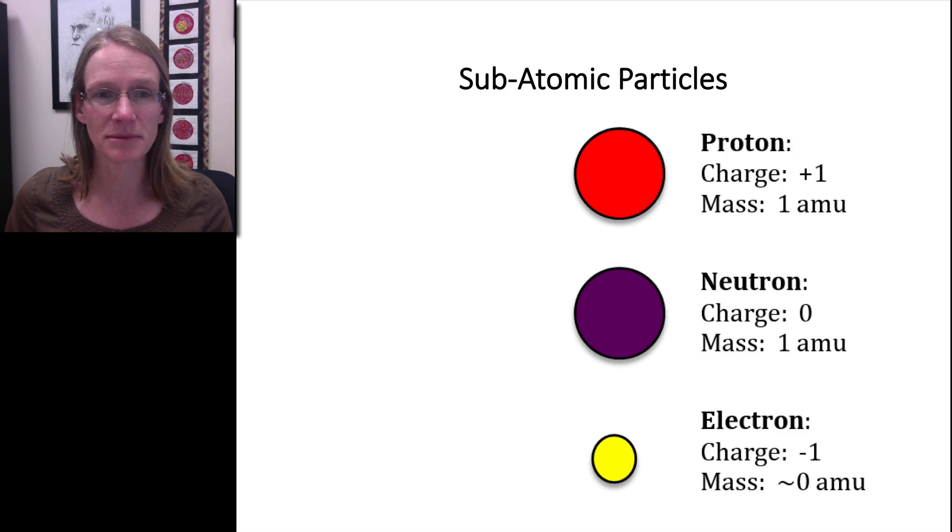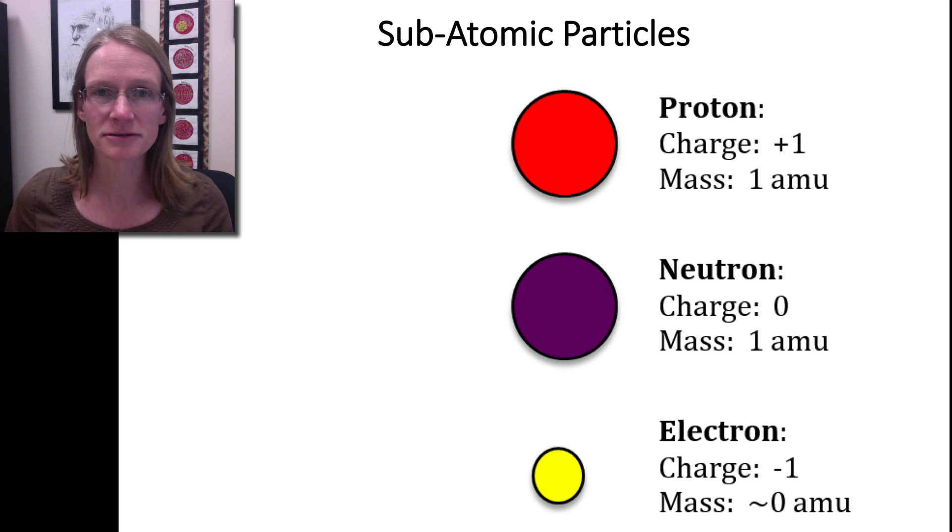Let's start by talking about the subatomic particles that comprise an atom. First we have protons, we have neutrons, and then we have electrons. The protons and neutrons are the two largest ones that comprise an atom.